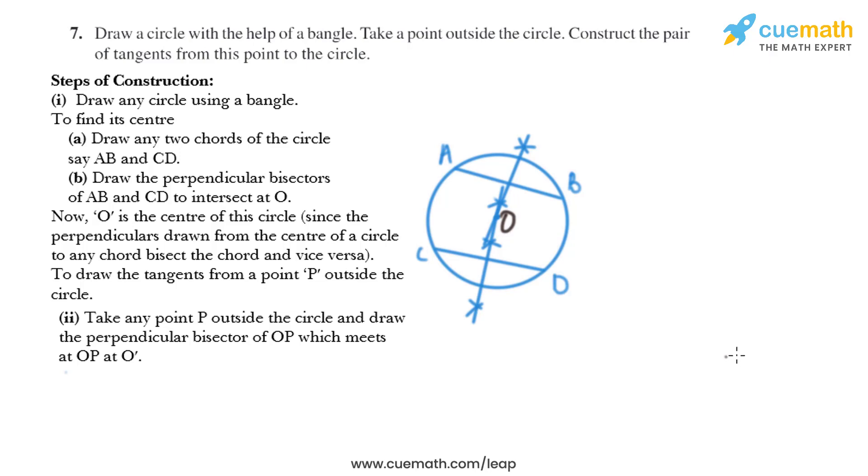Now in the next step, we need to take any point P outside the circle and we need to join O and P. And after that, we need to draw perpendicular bisector of OP. So I'll draw the perpendicular bisector like this.